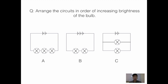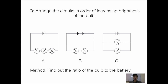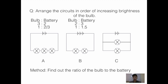Let's look at circuit A. The ratio of bulb to battery is 3 to 2, which gives us 1 to two-thirds. For circuit B, the ratio is 2 to 3, giving us bulb to battery 1 to 1.5. For the last circuit, because it's a parallel circuit, the ratio of bulb to battery is 1 to 2.